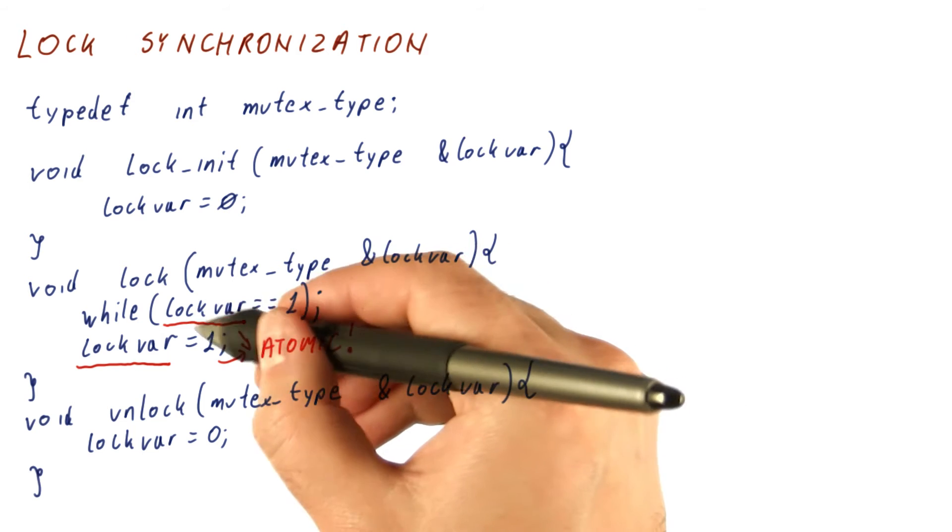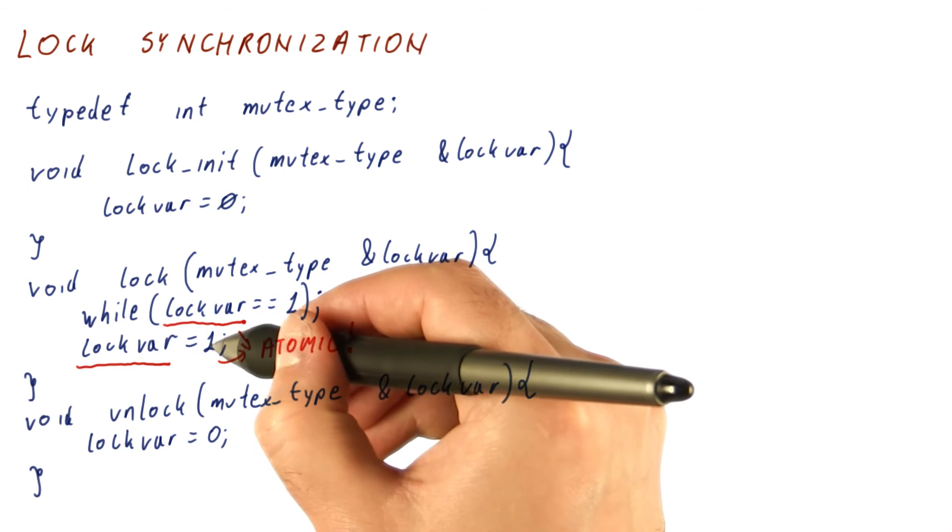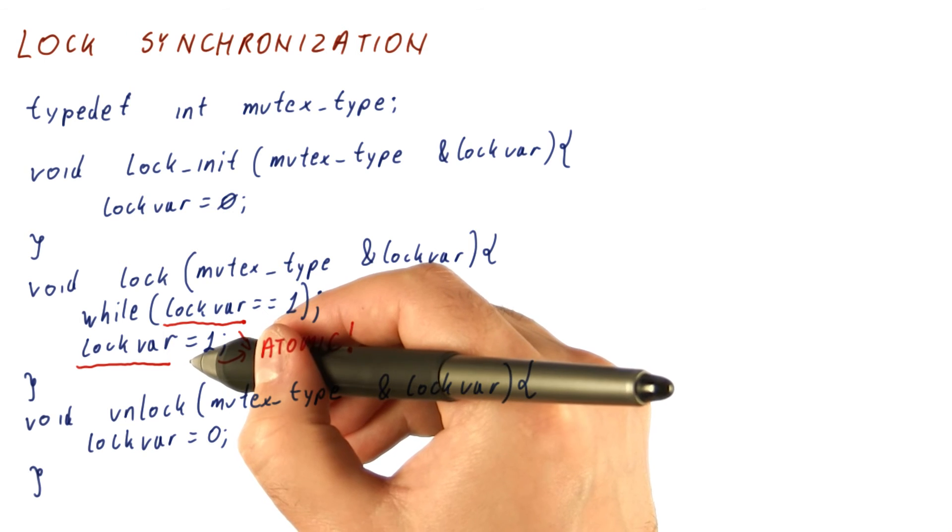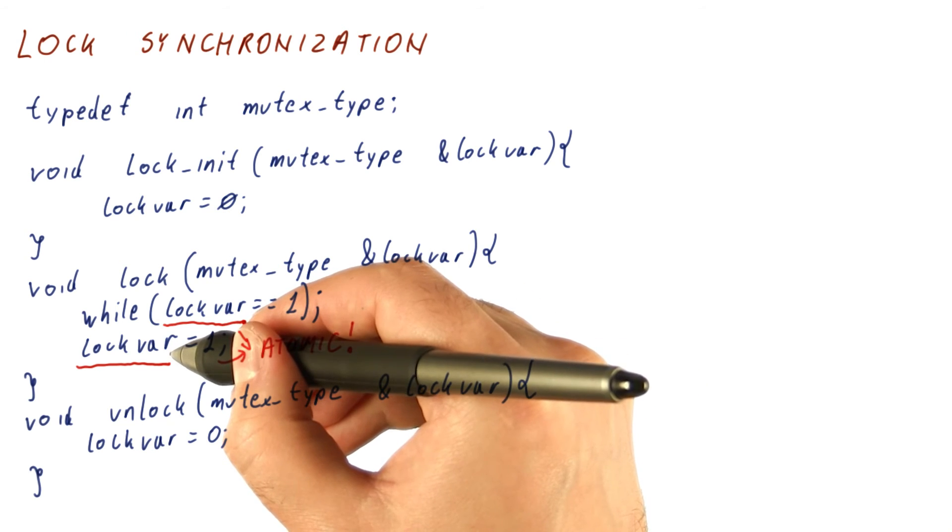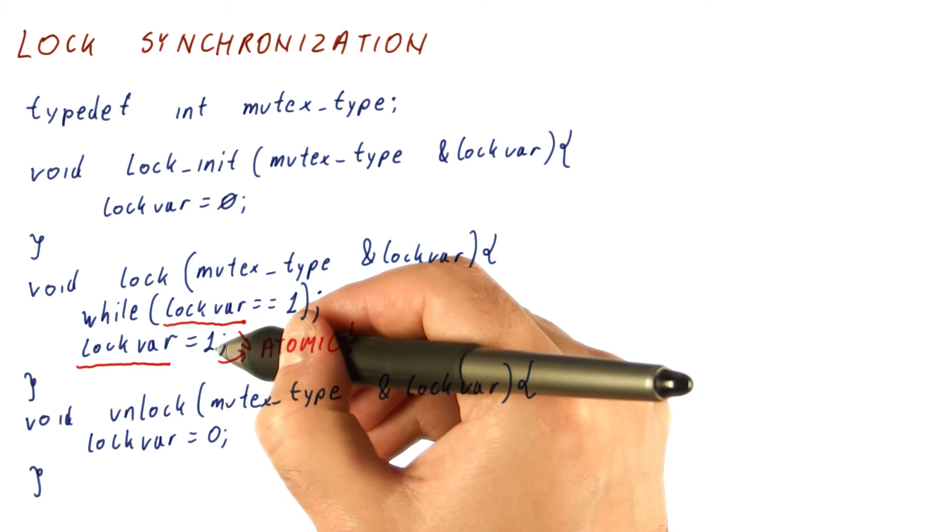Or at least, when we see a zero, we try to write one, but we know if we were the one to write one, or if somebody did it before us. We should not write one if somebody succeeded in writing one before us.